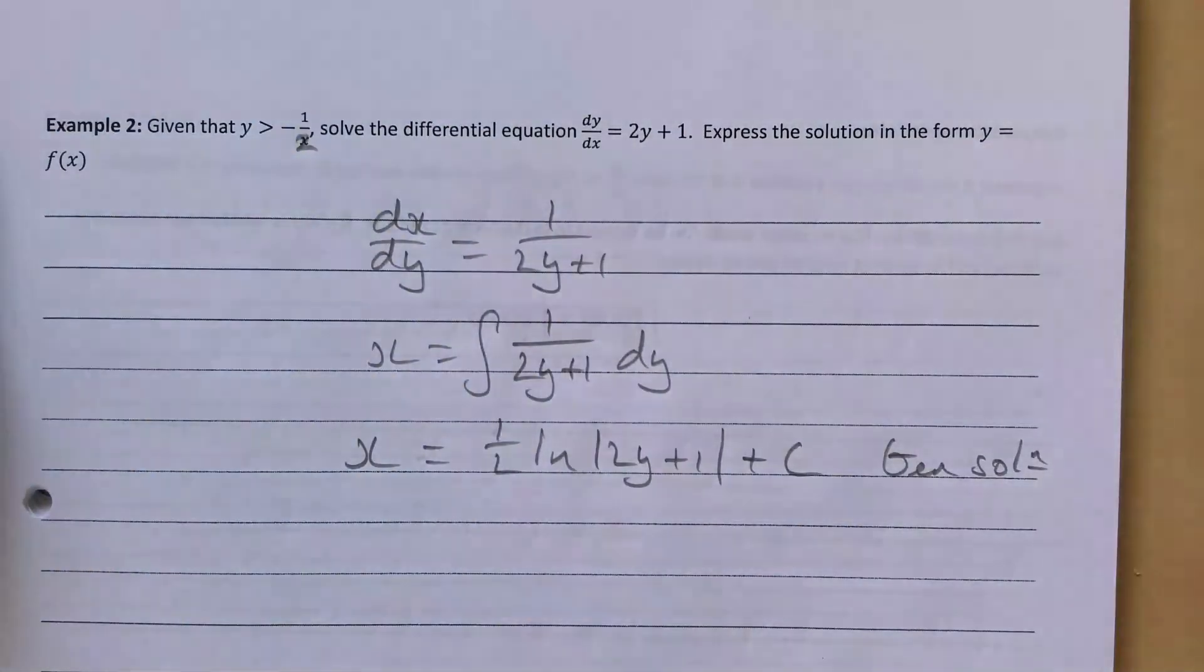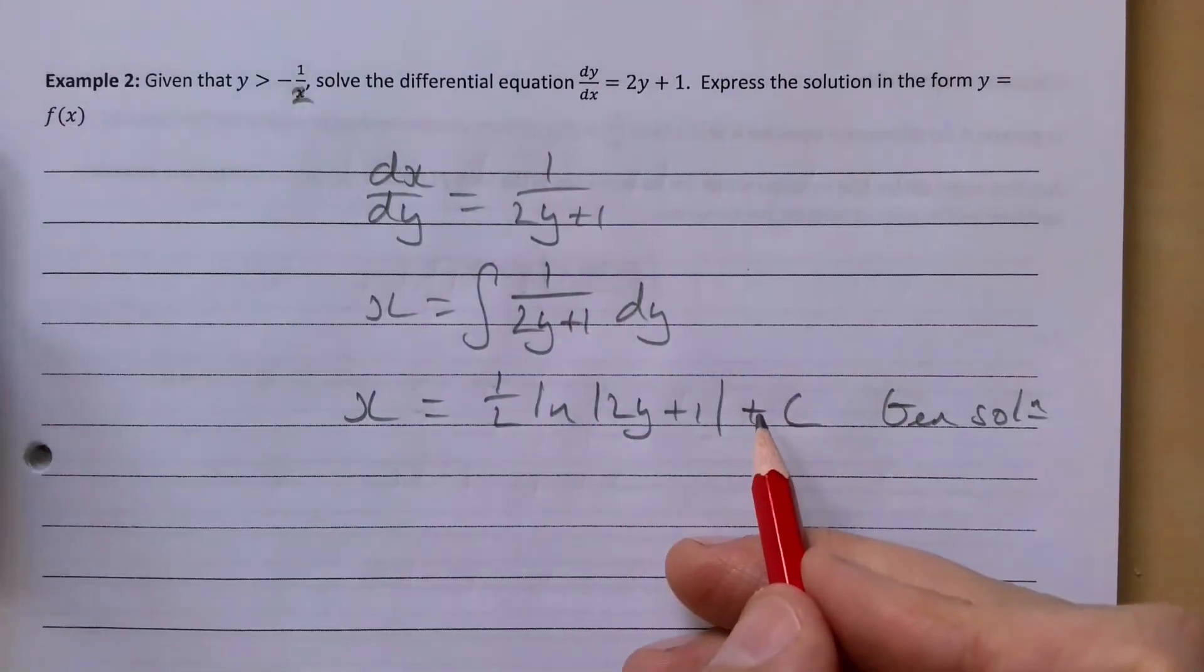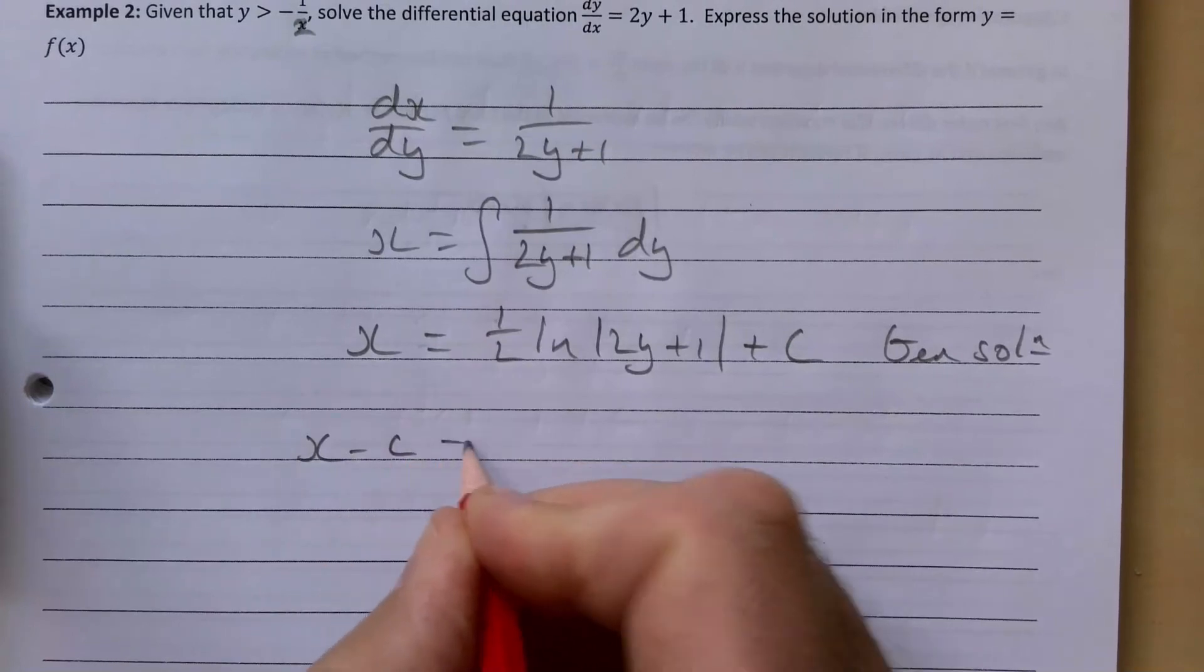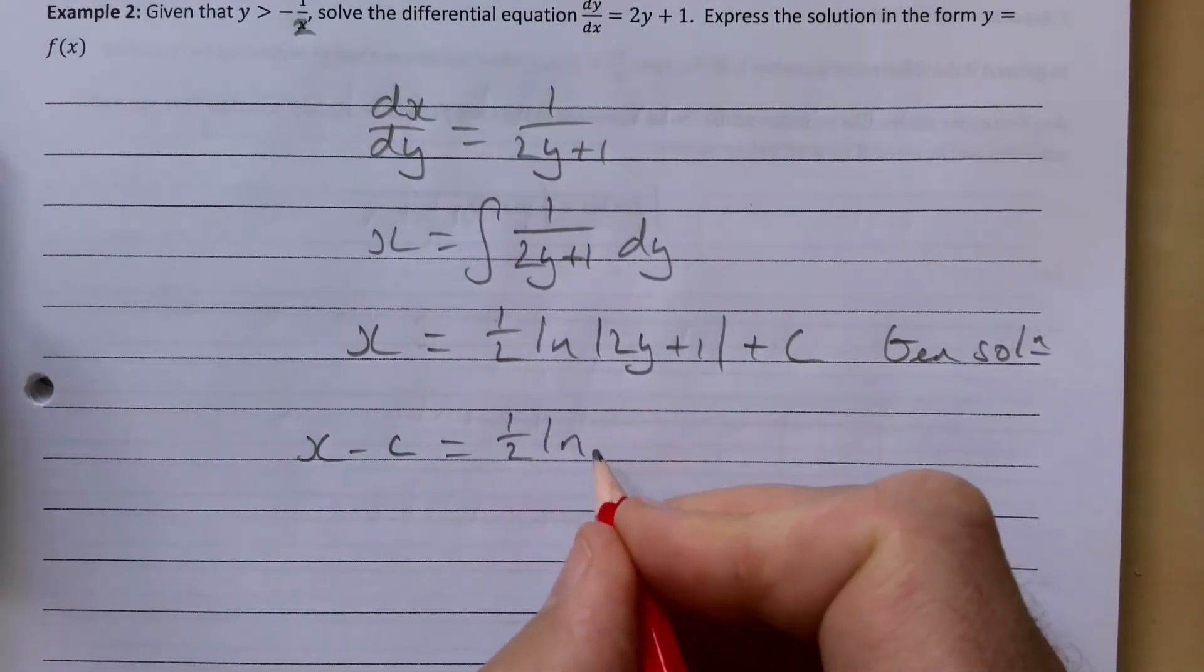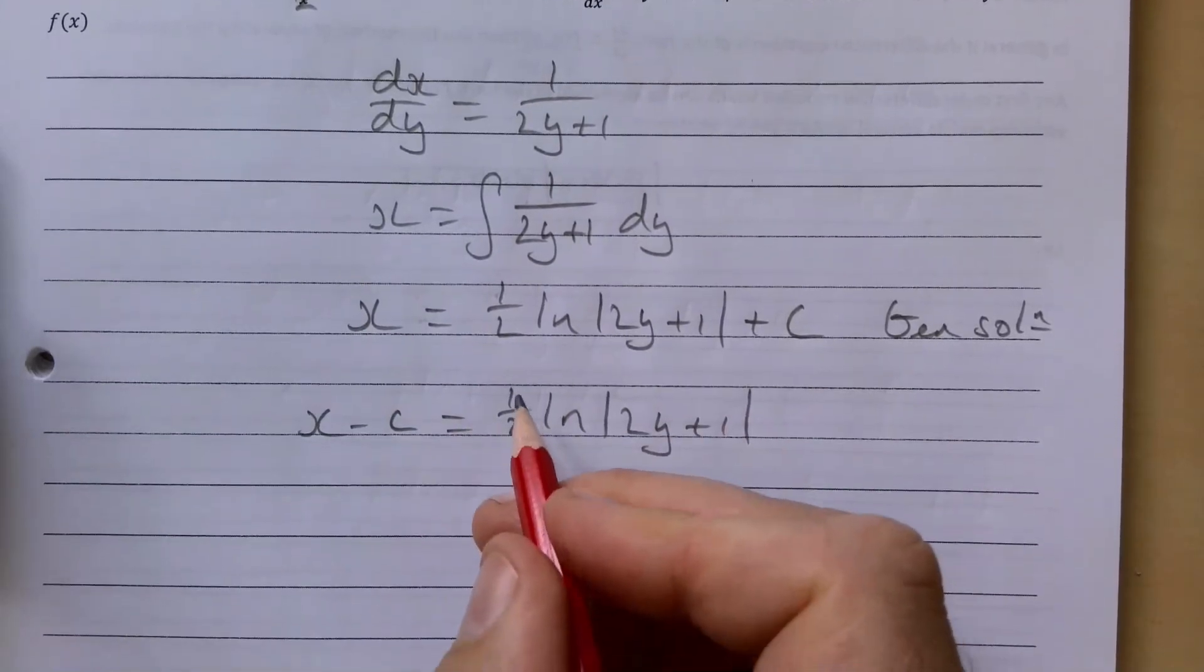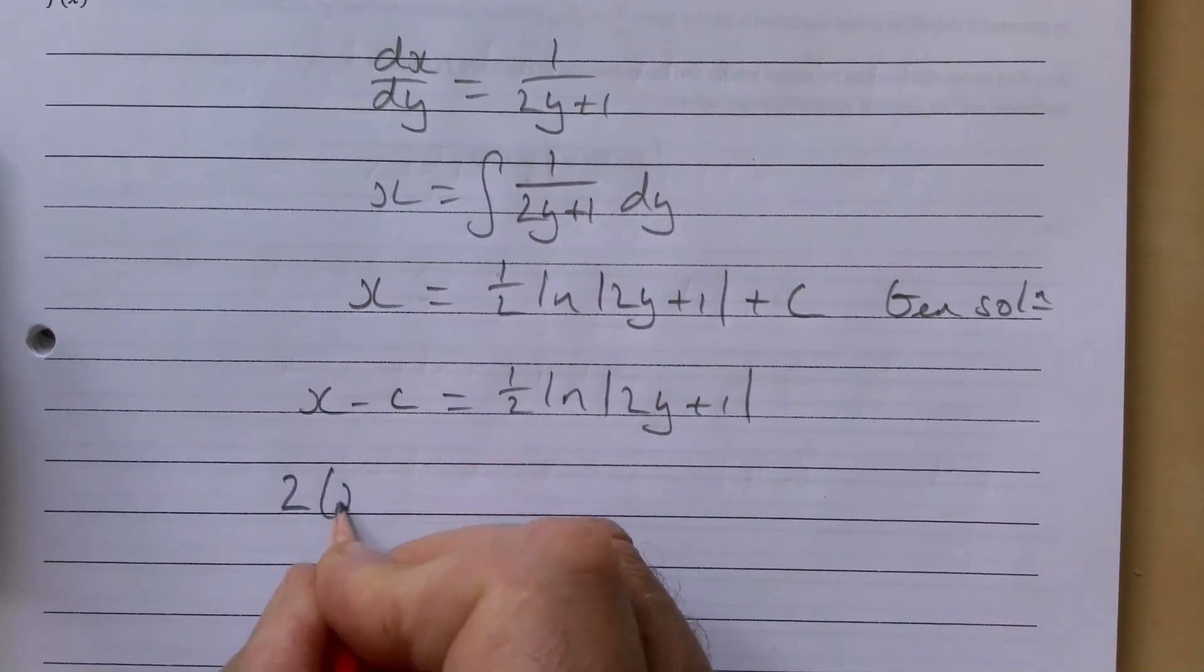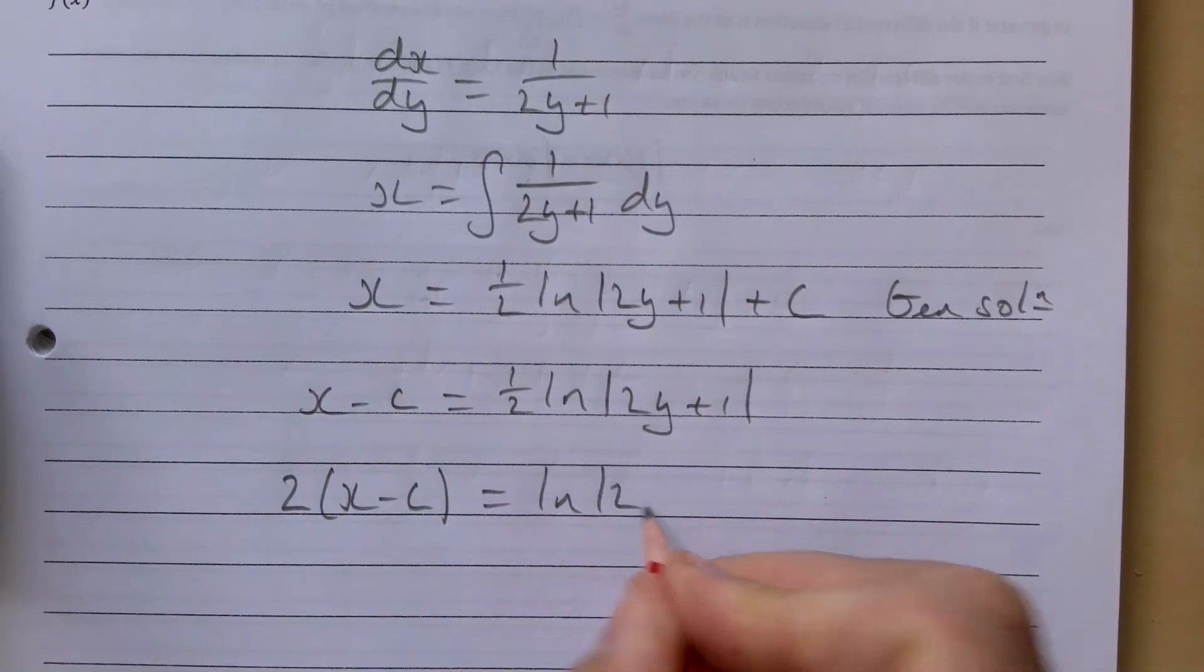We're not quite there yet because we need to rearrange it to get y in terms of x. We're going to take c to the other side, so x - c = ½ln(2y + 1). I think a decent move would be to multiply by 2. So 2(x - c) = ln(2y + 1). If we're trying to get y on its own, we need to use our logs and use e^x. So this is e^(2(x-c)) = 2y + 1.